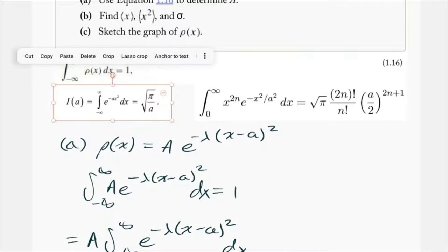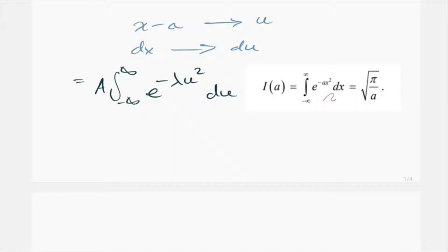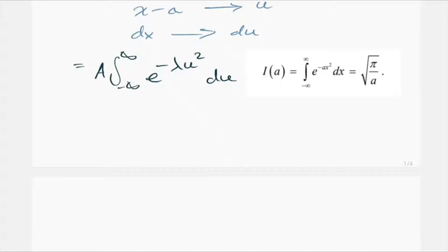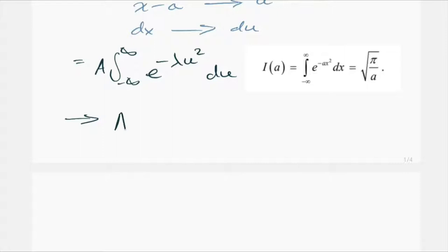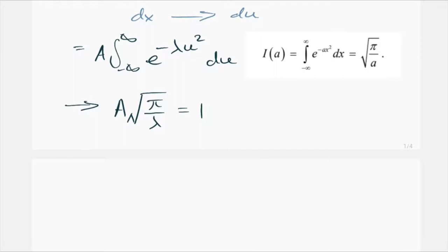That integral looks exactly like the Gaussian formula: the integral from negative infinity to infinity of e^(−c·x²) dx equals √(π/c). So this becomes a times √(π/λ), and since λ is the constant in front of u². We also know that equals 1 from the normalization condition. Therefore, a equals √(λ/π).